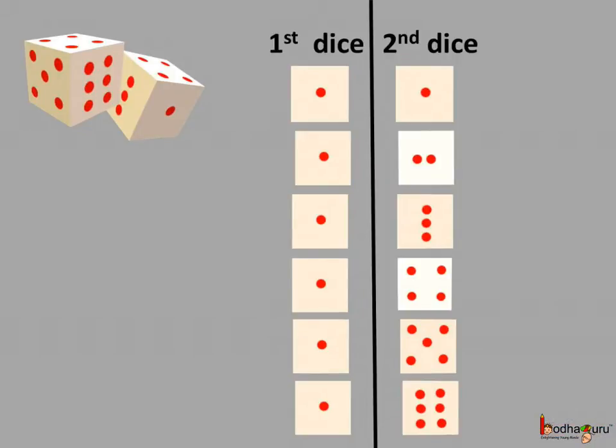Now, how many different combinations Raju can get on the second dice? Say, 1 comes on the first dice. So, for that any of the 6 numbers may come on the second dice. For example, 1, 2, 3, 4, 5 or 6. So, Raju may get 6 different results as (1,1), (1,2), (1,3), (1,4), (1,5) and (1,6).